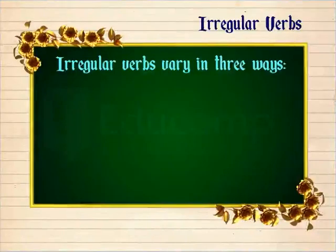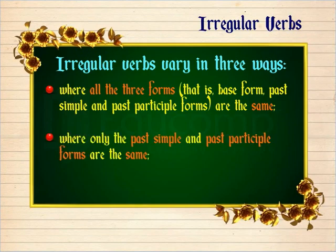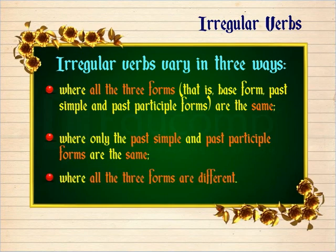Irregular verbs vary in three ways: where all the three forms — that is, base form, past simple, and past participle — are the same; where only the past simple and past participle forms are the same; and where all the three forms are different. Let's now check out the examples for each, one by one.